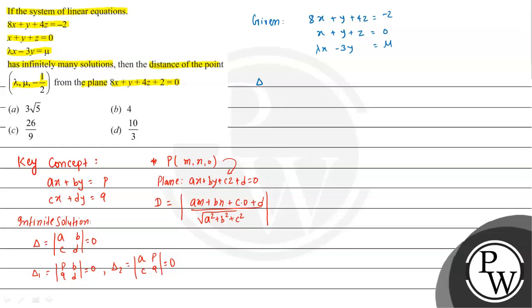We'll find delta, the determinant with coefficients: 8, 1, 4; 1, 1, 1; lambda, minus 3, 0. For infinite solutions, this equals zero. Expanding: 8 times (0 minus minus 3) minus 1 times (0 minus lambda) plus 4 times (minus 3 minus lambda) equal to 0. Solving this, lambda value equals 4.